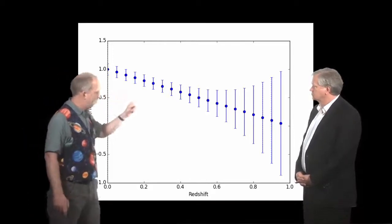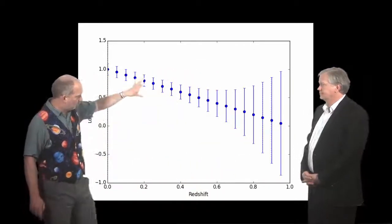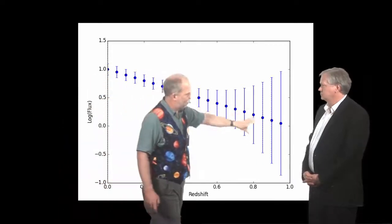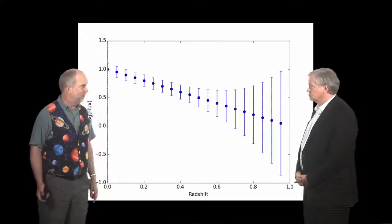But as you get fainter and fainter, these ones, you might only get one photon an hour. In that case, a 10-photon uncertainty is going to give you serious grief. That's right. So your errors are going to go up and up and up as you get fainter and fainter and fainter. And this is pretty much inevitable. It's the very nature of how the observations work.